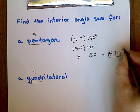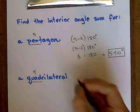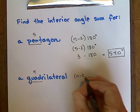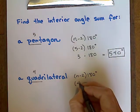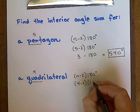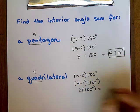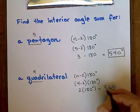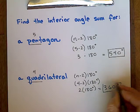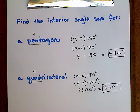For a quadrilateral, it's the same process. A quadrilateral has four sides, so I take 4 minus 2, which is 2, multiply by 180, and I get 360 degrees — which we saw previously. The sum of the interior angle measurements for any quadrilateral, including squares and rectangles, is 360 degrees. So to find the sum of the interior angles of a convex polygon: take the number of sides, subtract 2, then multiply by 180 degrees.